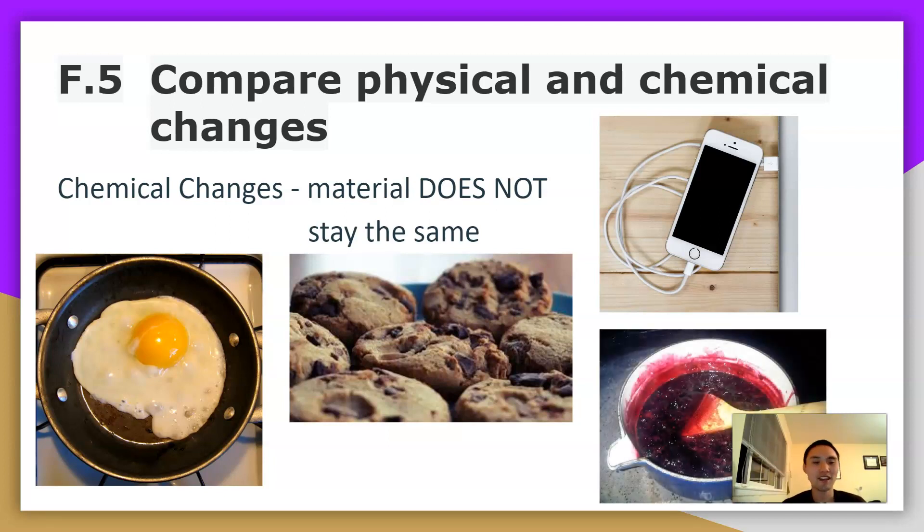And also making jam on that line of thought is also a chemical change because you went from the original items, which is like sugar and whatever berries and stuff you use, and you made it to a jam. You cannot revert it back to the original fruit form, so to speak. So chemical change.